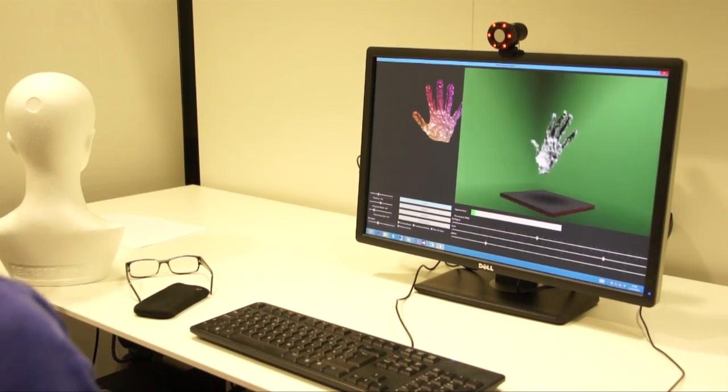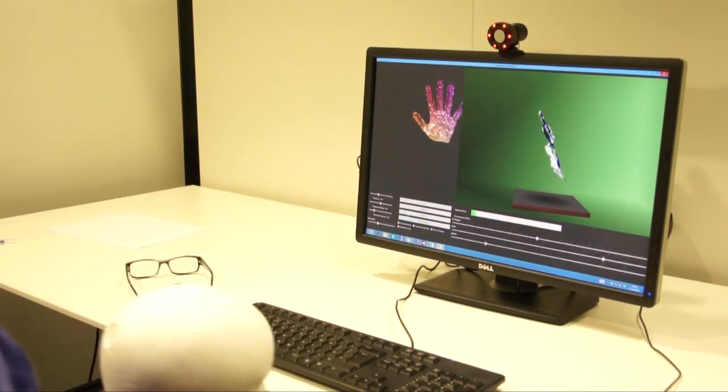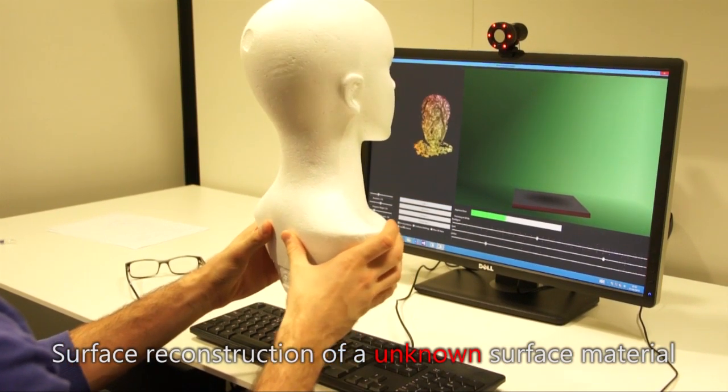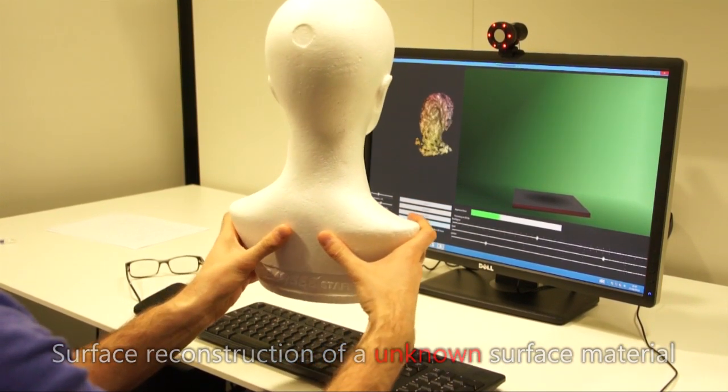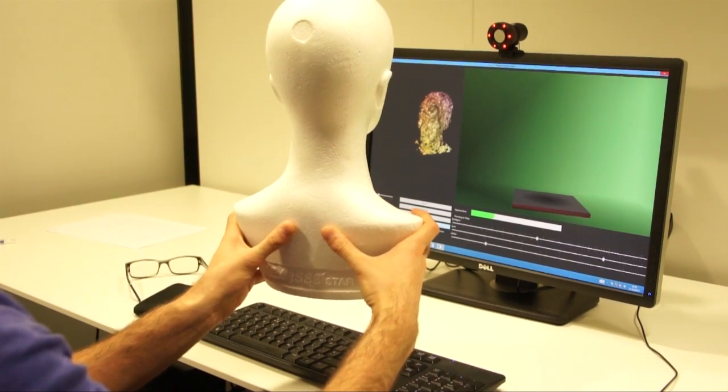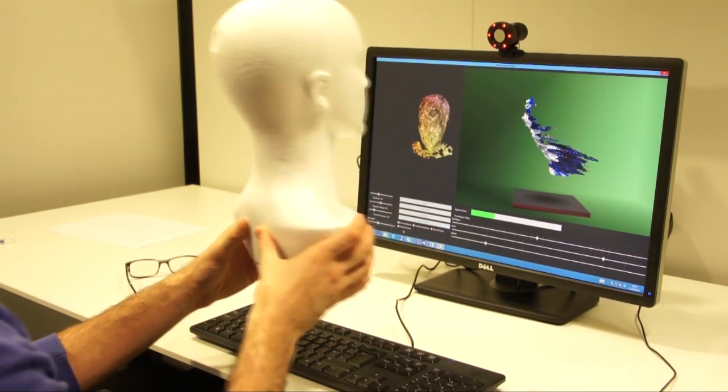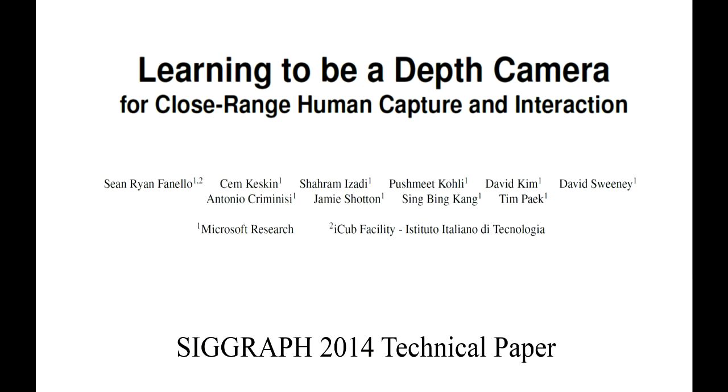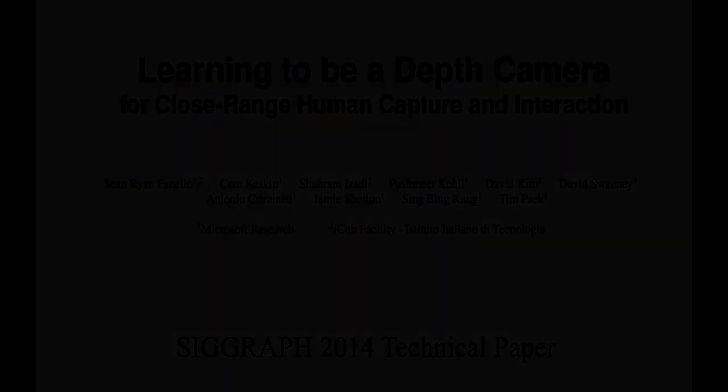In this final example, we demonstrate the main limitation of our system. Because we train for a specific surface albedo, in this case skin, surfaces with other reflectance properties will cause errors in the depth estimation algorithm. However, for interactive scenarios focusing on faces and hands, our method provides a low cost and efficient way for turning any camera into a depth camera.